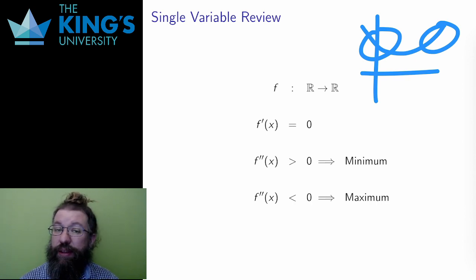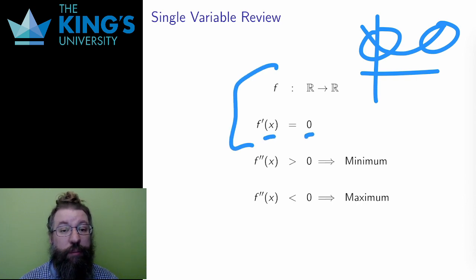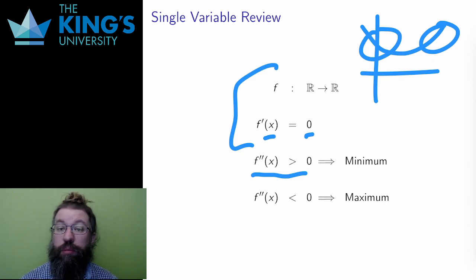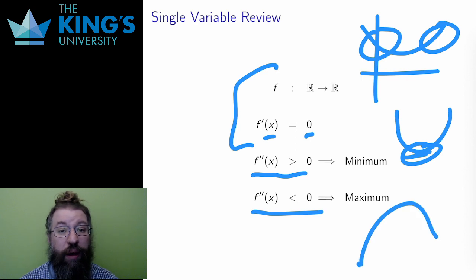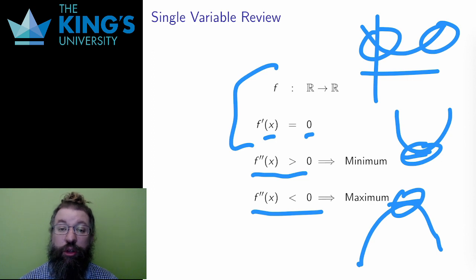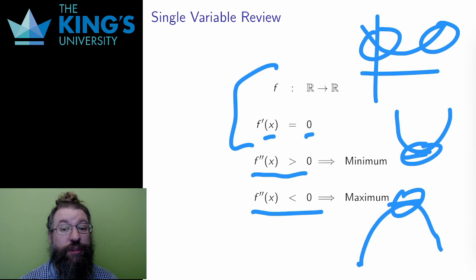I had such a method for single variable calculus using the second derivative. For a critical point x of a single variable function, the critical point was a minimum if the second derivative was positive — it was concave up, and the minimum is at the bottom of a concave up curve. The critical point was a maximum if the second derivative was negative — concave down, and a maximum is at the top of a concave down curve. And if the second derivative was zero, it was inconclusive; it might be a minimum, a maximum, or neither. So I want to extend this process to use second derivatives of scalar fields to classify their extrema.